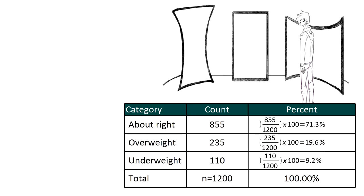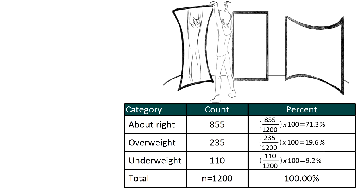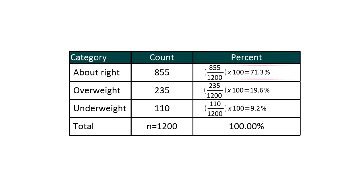Now that we've summarized the distribution of the body image variable, let's interpret the results. What percentage of the sample students fall into each category, and are they equally divided? Most of the sample — 71.3% — felt that their weight was about right, and a comparatively small percentage felt underweight, at 9.2%. The overweight category was 19.6%. I'm interested in looking at the association between how much a person smokes — that is, quantity and frequency of smoking — and the presence or absence of nicotine dependence.